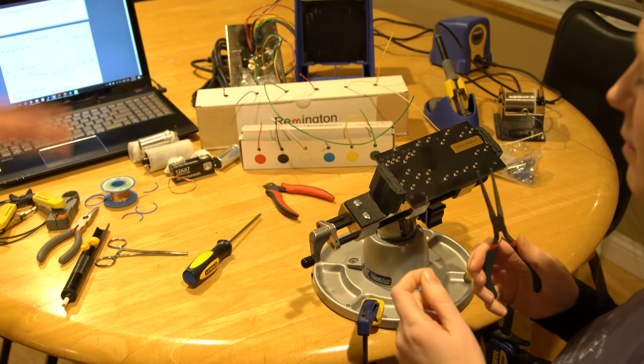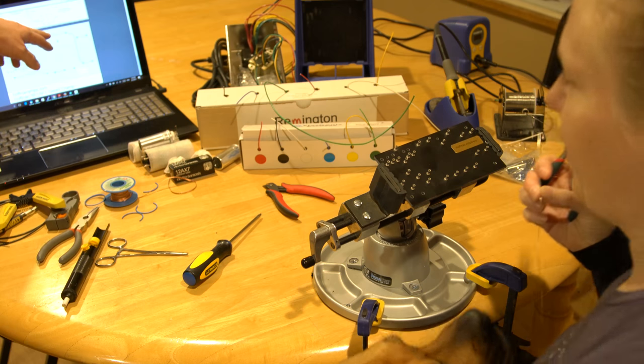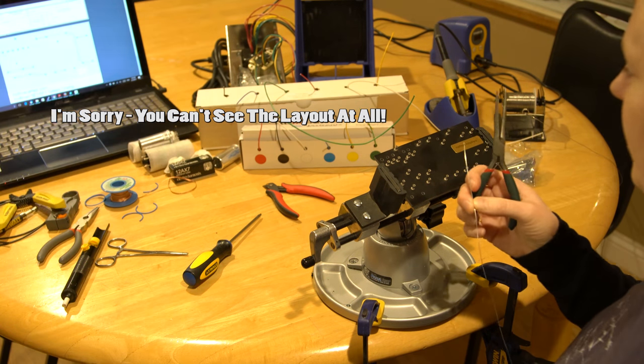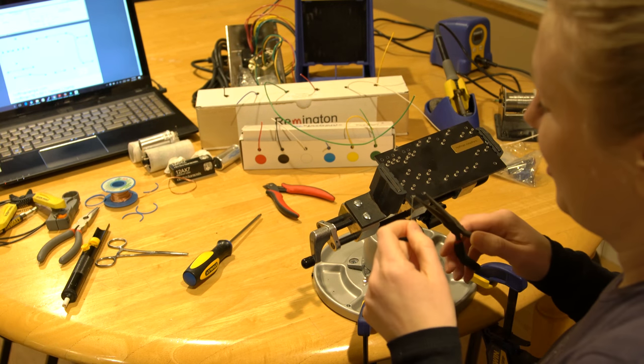All right, so she's going to first start jumpering stuff. And you guys can probably see a little bit in the background here, but she's looking at this to jumper, and she needs to jumper between these three. So she's going to get her pliers and bend a little hook on the end that we'll be able to hook around.